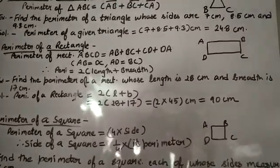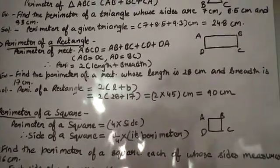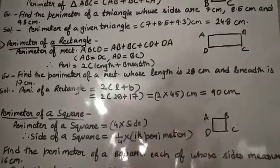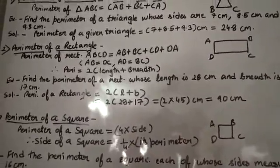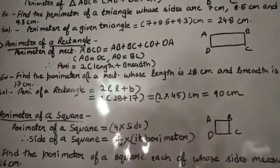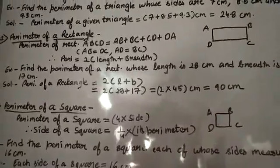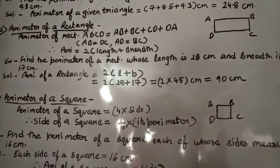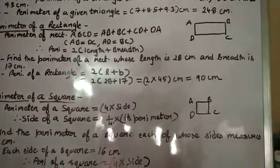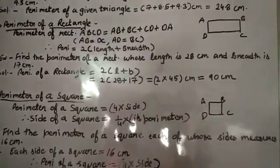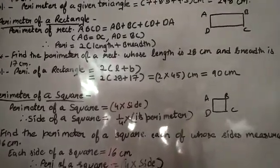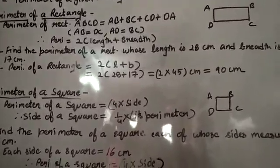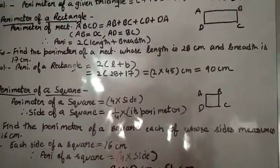Now I will explain you this with the help of an example. Find the perimeter of a rectangle whose length is 28 cm and breadth is 17 cm. In a rectangle opposite sides are parallel and equal, and it has length as well as breadth. So perimeter of a rectangle is equal to 2 times of length plus breadth — that is 2 multiplied by 28 plus 17 cm.